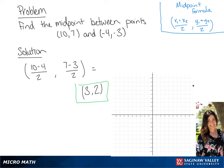Now we're going to plot the line using the points we originally used, and draw the line, and then we can label (3, 2), which is our midpoint.